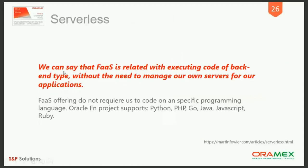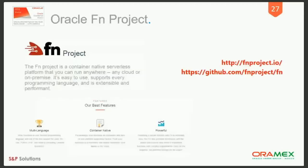Serverless means executing backend code without the need to manage your own servers. Now let's go to the Oracle FN project. Oracle FN is an open source project from Oracle — a polyglot platform where you can write functions in Python, PHP, Go, Java, JavaScript, or Ruby. You can go to fnproject.io to download it; it is just a binary. You just need Docker. You can get the source code from GitHub along with samples and many contributions from the community. I encourage you to use it.